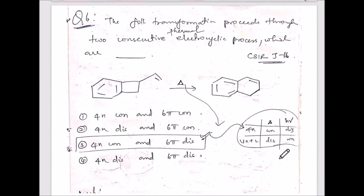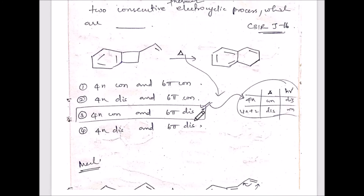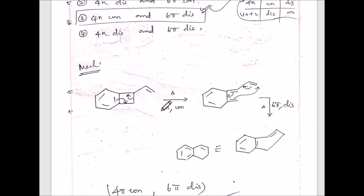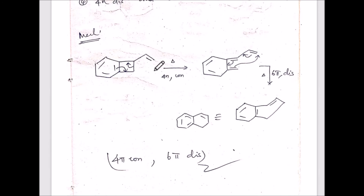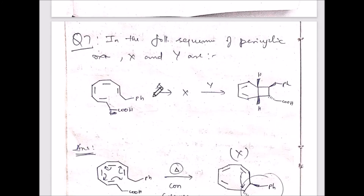Question six, from CSIR June 2016: the transformation proceeds through two consecutive thermal electrocyclic processes. The first involves a 4n system (con rotation) and the second involves a 6-pi (4n+2) system. You can solve this using the Woodward-Hoffmann rule for each step to determine the rotations involved.